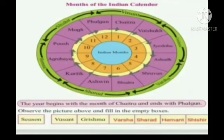These twelve months are also divided into six parts for the seasons. Let's see the seasons. First is Vasanth, then Grishma, Varsha, Sharad, Haiman, and Sheshi.